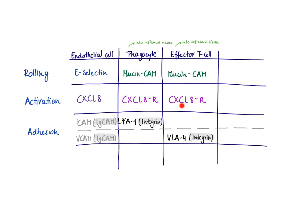The chemokine used is the same. But for the tight interaction, we have a different integrin interacting with a different IgCAM on the endothelial cell. In the case of an effector T cell, they express VLA-4 at high levels, and it will interact and adhere with VCAM on the endothelial cell.